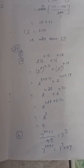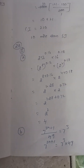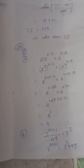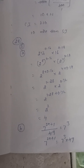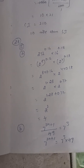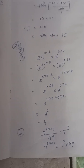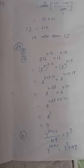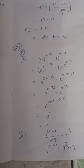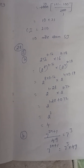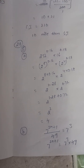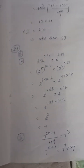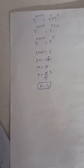Next, question 28B: simplify 256 power 0.16 into 16 power 0.8. Simplifying gives 21 and 4. Next: given 7 power (2n+1) divided by 49 equals 70 cubed, find the value of n. Simplifying gives n equals 2.